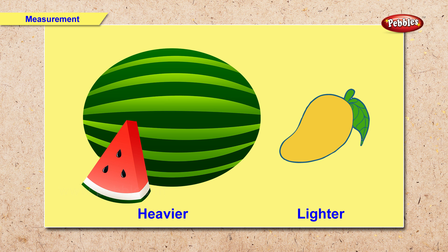And now we have a watermelon and a mango. Which fruit is heavier and which fruit is lighter? Right. The watermelon is heavier. The mango is lighter.